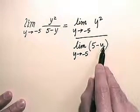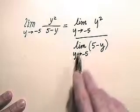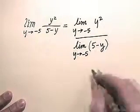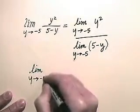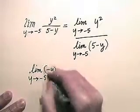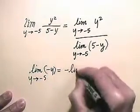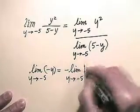The limit as y approaches negative five of negative y would be simply the negative of the limit as y approaches negative five of y. And of course, the limit as y approaches any specific number of y itself is just that specific number. So we have negative the quantity negative five, which is of course five.